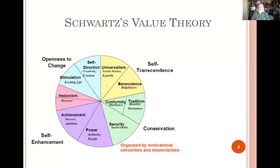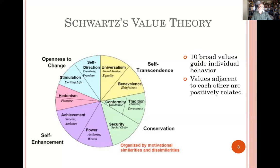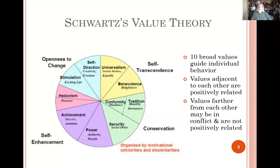It's not about self. So we have the ten broad values that guide our behavior. The values that are adjacent in the model are positively related and complement each other in alignment, whereas values farther apart or completely opposite each other may be in conflict and don't have a positive relationship.